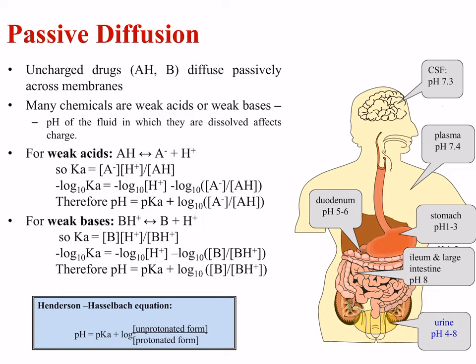Uncharged molecules diffuse passively across membranes, but many chemicals are weak acids and weak bases. The pH of the fluid a chemical finds itself in can affect its charge. The behavior of molecules at biological membranes can be quantified by equations — most notably, the Henderson-Hasselbalch equation. This is important because the movement of molecules can vary throughout the body, with pH ranging from 1 in the stomach to as high as 8 in the lower colon.